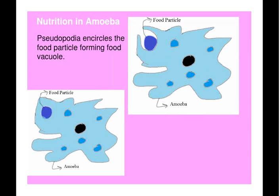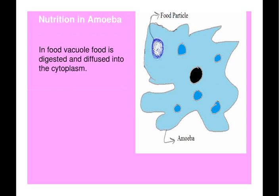Pseudopodia are the finger-like projections formed by the body of amoeba. Pseudopodia encircles the food particle, forming a food vacuole. In the food vacuole, food is digested and diffused into the cytoplasm. The food is digested and undigested materials remain in the vacuole.